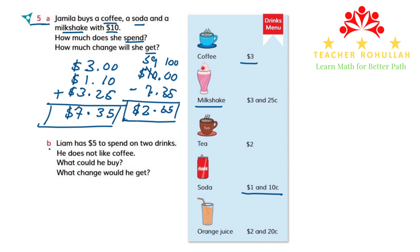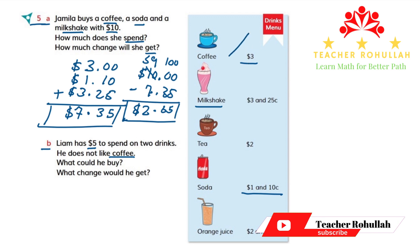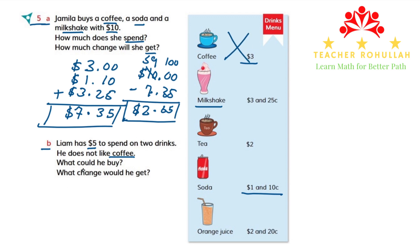In part B of this question it says Liam has $5 to spend on two drinks. He does not like coffee, so we can cross out coffee. What could he buy and what change would he get? We have to consider that Liam has $5 and should buy items that do not exceed $5. If he chooses tea, which is $2, the price of the second item should not make the total exceed $5. Milkshake cannot be in the list because $2 plus $3.25 is more than $5.